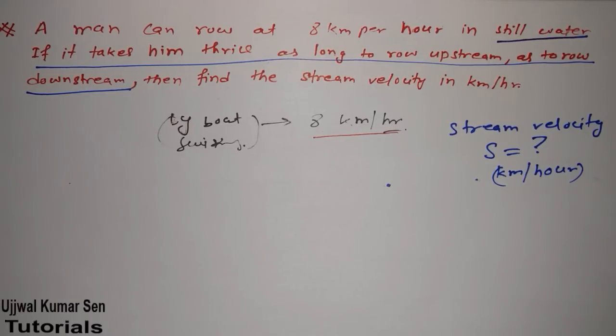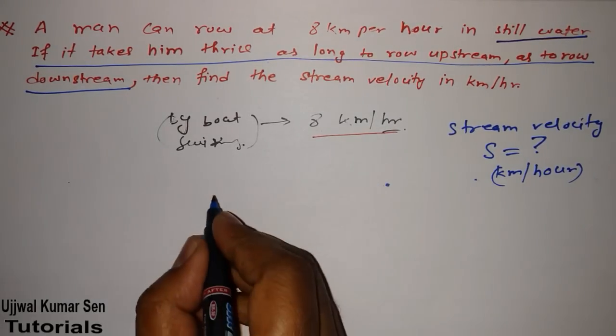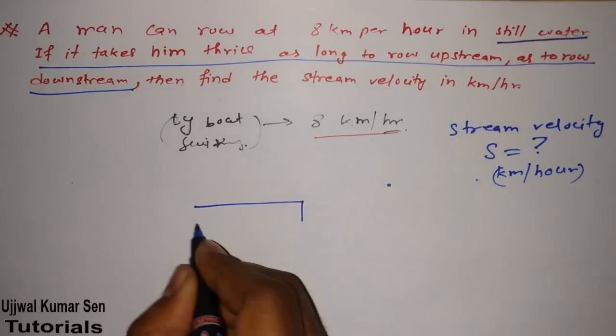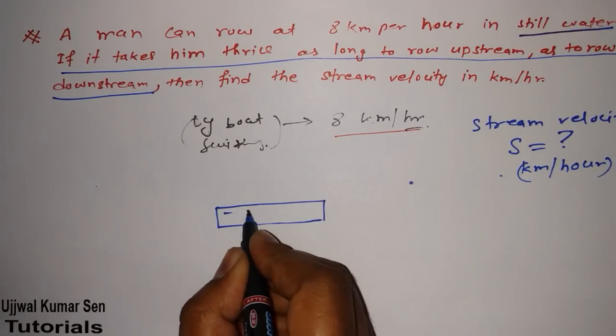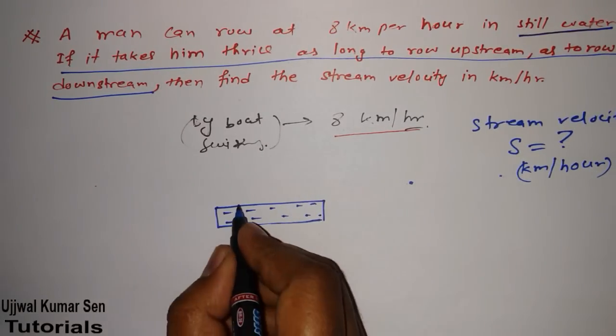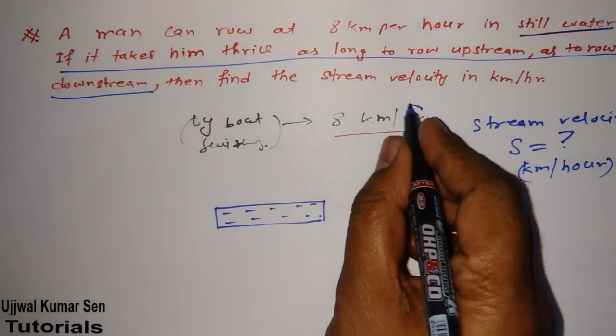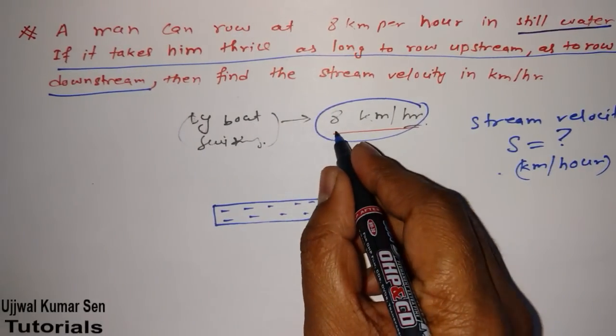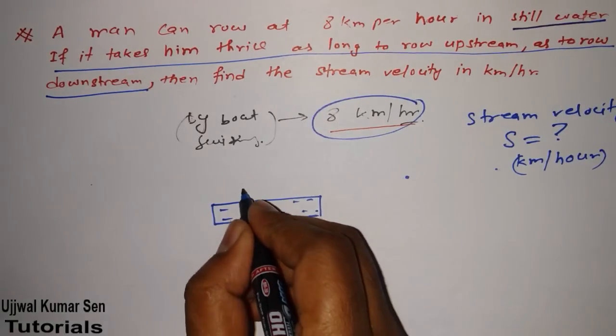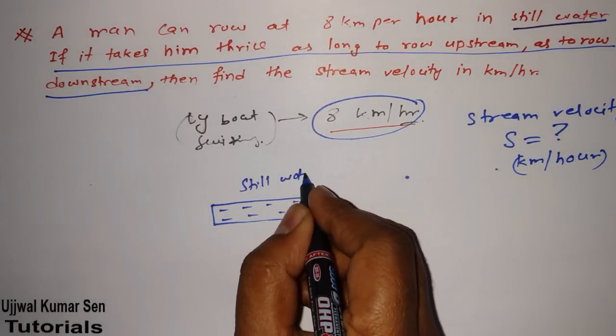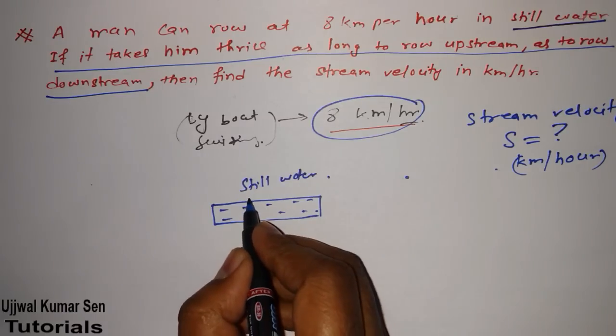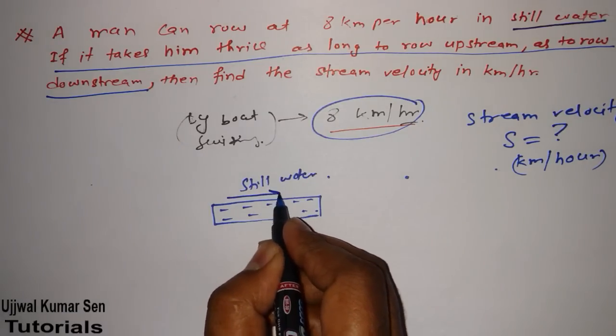Now, thing is that, what we have given? That is, the speed of the man of rowing is 8 km per hour. So, suppose that, this is a river. And, person of the speed, rowing speed is 8 km per hour in the still water. Still water. But, suppose that, the river is flowing like this.